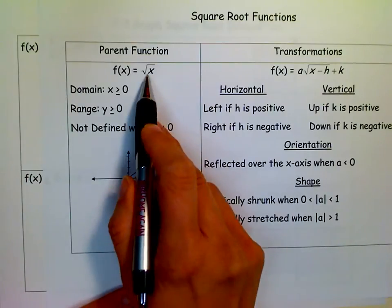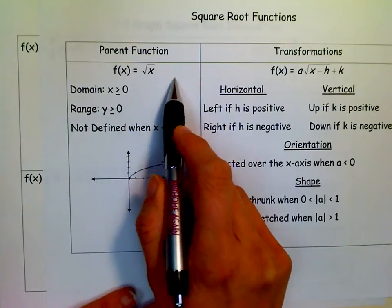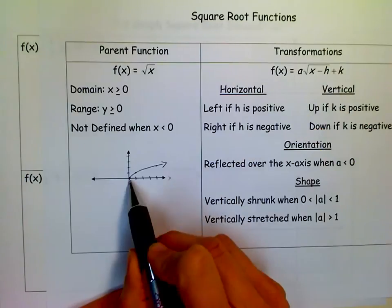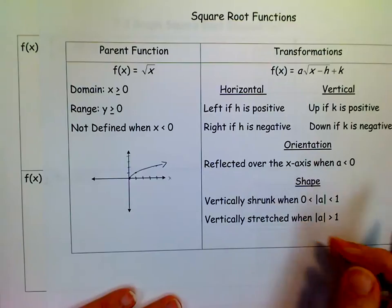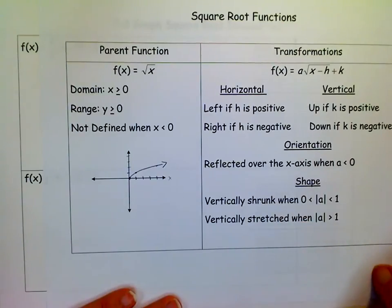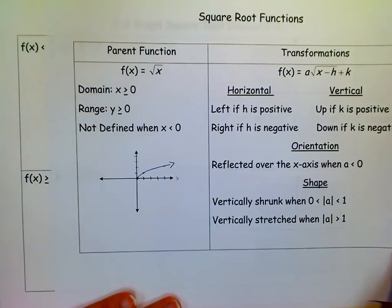Another important thing is if you just have the square root of x, you don't have an a. You go over one, up one. You go over four, up two from that. So that's important to keep in mind. And knowing what the a would do to that makes it a lot easier to graph.